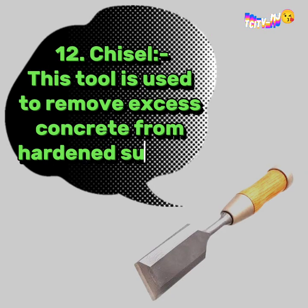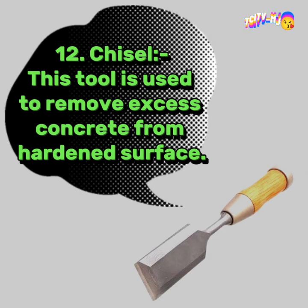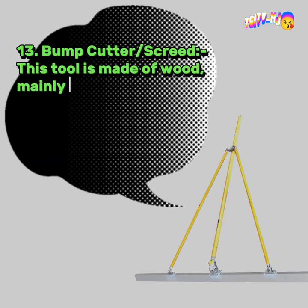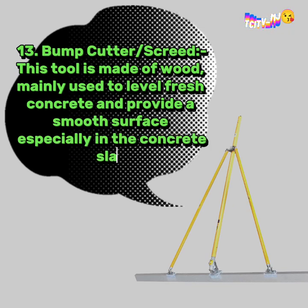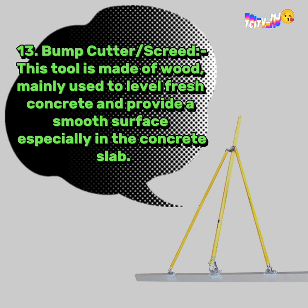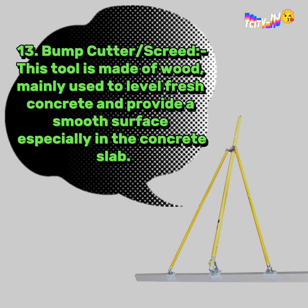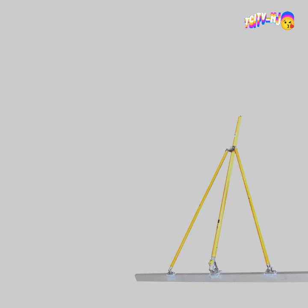12. Chisel: this tool is used to remove excess concrete from a hardened surface. 13. Bump Cutter / Screed: this tool is made of wood, mainly used to level fresh concrete and provide a smooth surface, especially in the concrete slab.